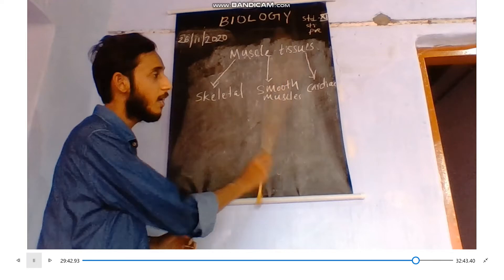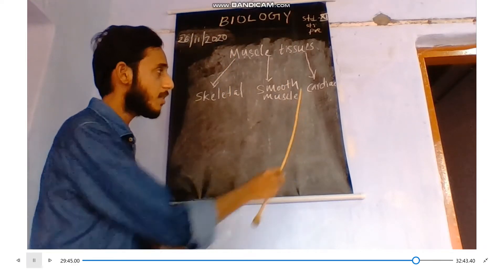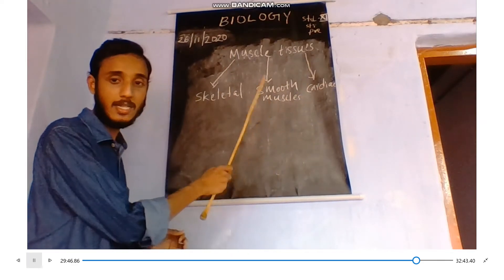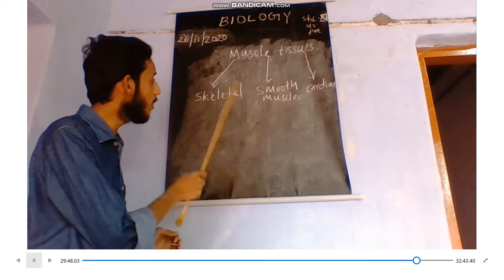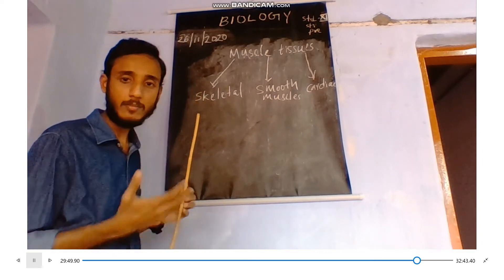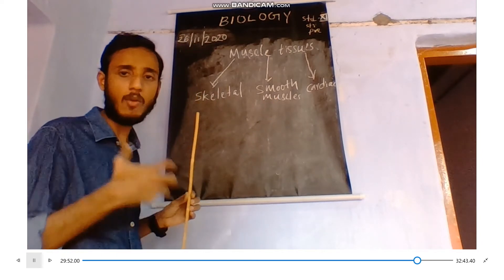This is called cardiac muscle tissue. The cardiac muscles are in the heart and the smooth muscles are in the organs. The skeletal muscles are associated with the bones.